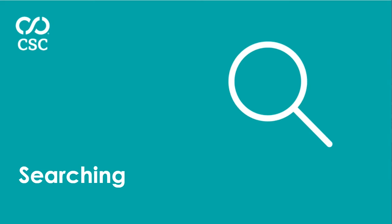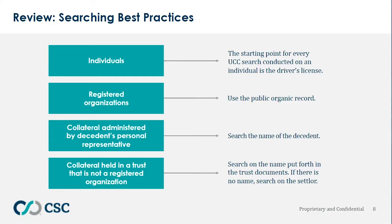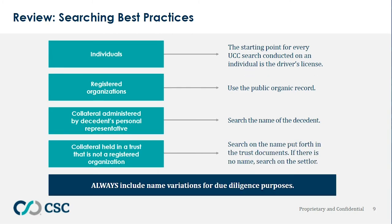Next up is UCC searching. Searching best practices cover two subjects: individuals and entities. For individuals, the starting point for every UCC search is the driver's license. For registered organizations, you want to use the public organic record. For collateral administered by a decedent's personal representative, search the name of the decedent. For collateral held in a trust that is not a registered organization, search the name put forth in the trust documents — if there is no name, search on the settlor. Always include name variations for due diligence purposes, which is crucial.